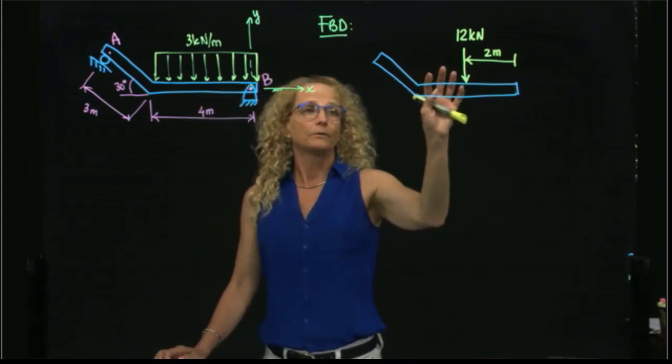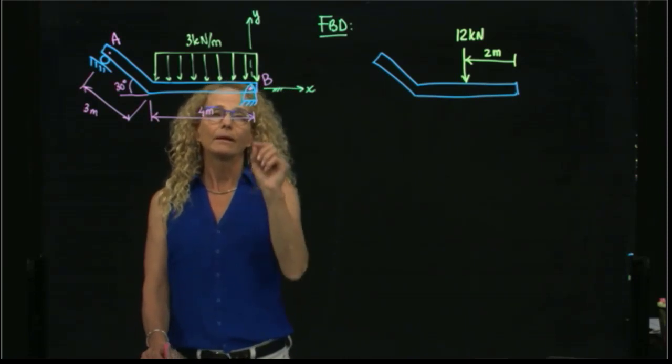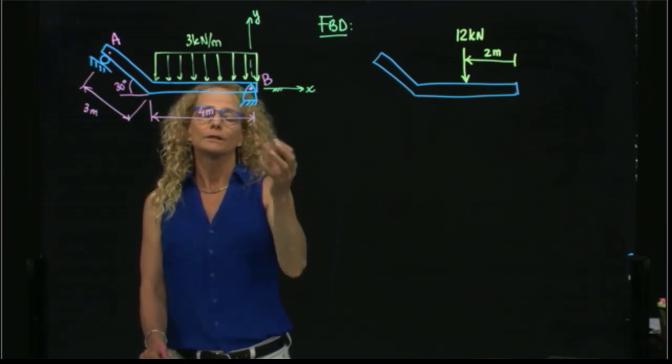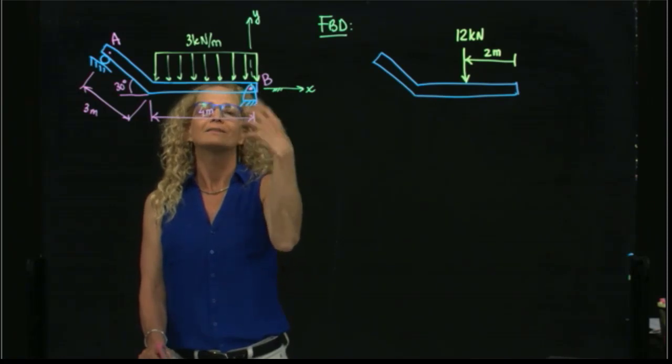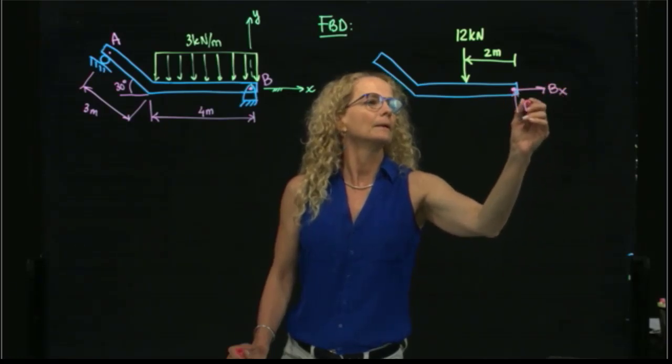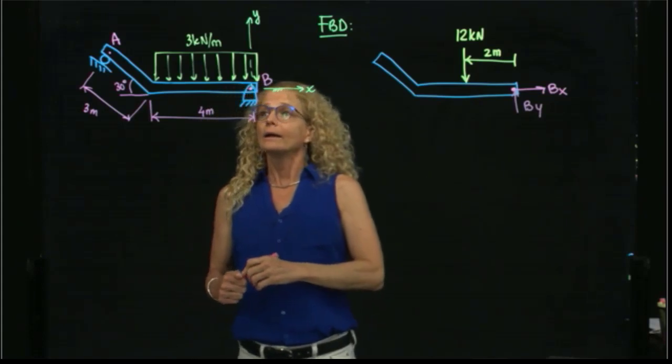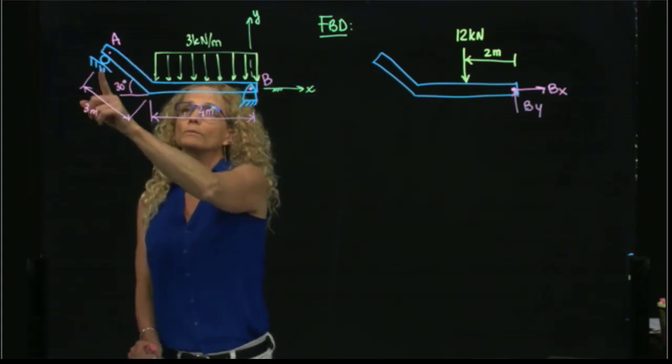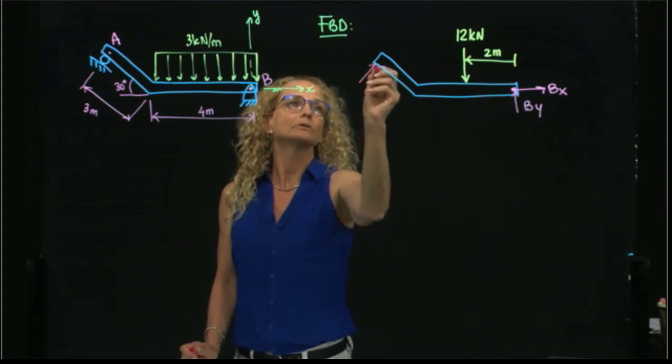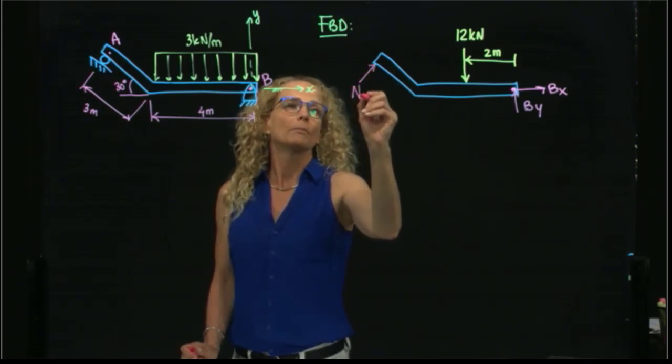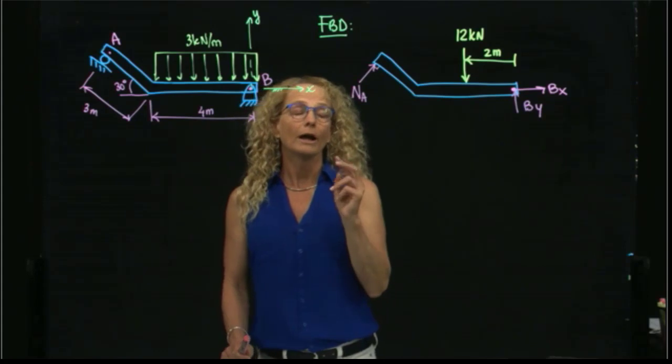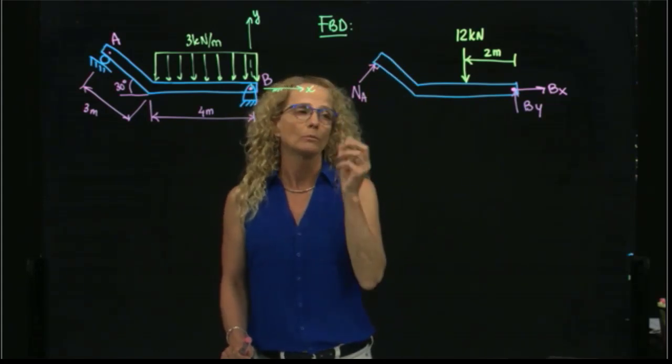Then, this is the active force. Now we have the reactive forces. As I said, a pin restricts motion in Y direction and in X direction. So any motion that is restricted receives a reaction force. Therefore, I have two reaction forces: BX and BY. And at A, a simple support only restricts motion perpendicular to the beam. Therefore, we have only one reaction, which we can call normal force at A. So this is perpendicular to the beam. We do not have a reaction along the beam because that motion is not restricted.